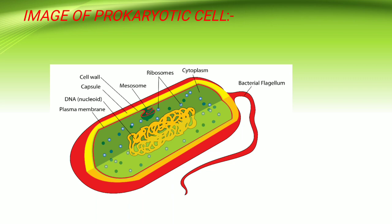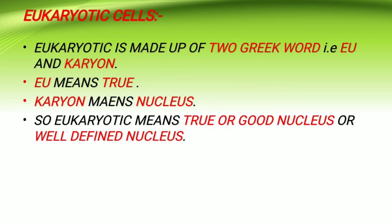Now let us know about eukaryotic cells. What is the meaning of eukaryotic? Eukaryotic is made up of two Greek words: eu and karyon. Eu means true and karyon means nucleus. So in whole, eukaryotic means true or good nucleus, or well-defined nucleus.